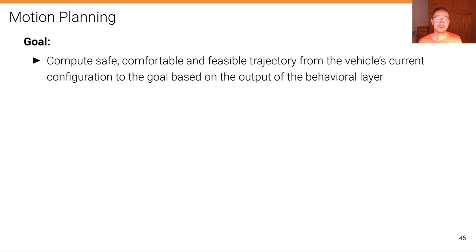The goal of motion planning is to compute a safe, comfortable, and feasible trajectory from the vehicle's current configuration to the local goal based on the output of the behavioral layer. We really just consider this planning very locally, so it's typically planning a few meters ahead.